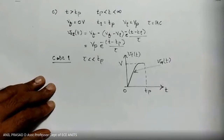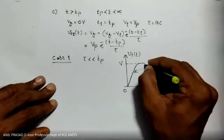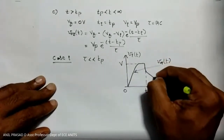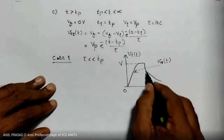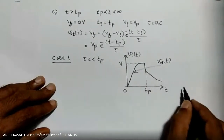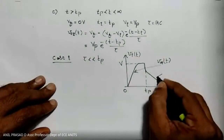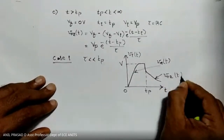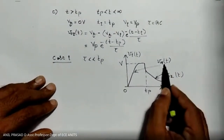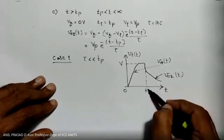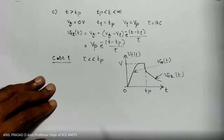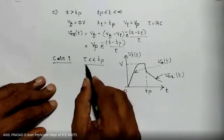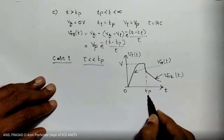Over the interval 0 to tp, V_out1(t) reaches capital V quickly because tau is very small. From tp to infinity, V_out2(t) decays toward 0. Because tau is very small, the output reaches maximum well before tp.